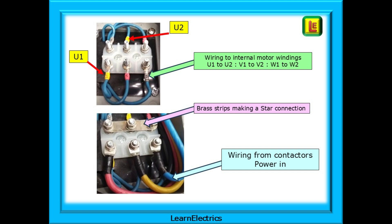In the lower photograph, we've added two brass strips to the terminal block, making this a star configuration, and also added the three power conductors: red, yellow, and blue in this case.